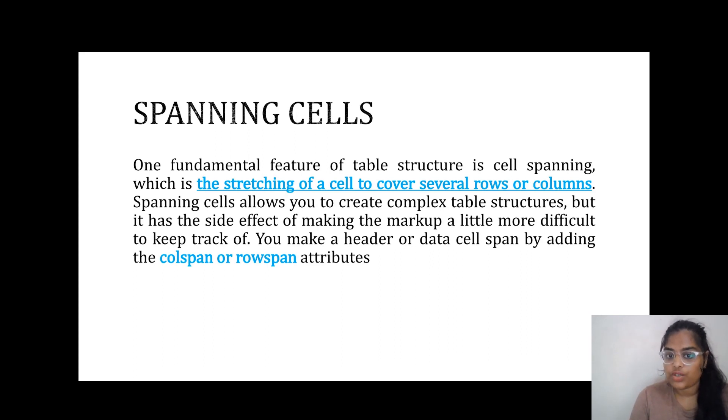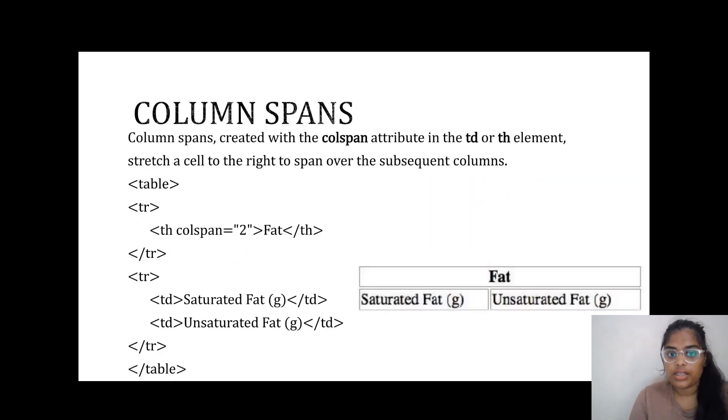Spanning cells allows you to create complex table structures, but it has the side effect of making the markup a little more difficult to keep track of. You make a header or data cell span by adding the colspan or rowspan attributes, which we discussed earlier.